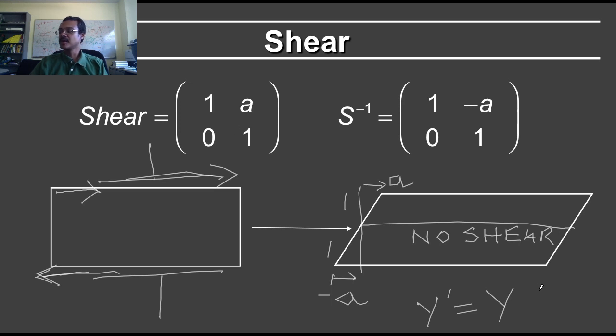However, in the first row of the matrix, you have that the new value of x, which is x prime, is equal to the old value of x. But now you have to add this quantity, which is the value of A times the y coordinate. So how much the shear is will depend on the y coordinate. And that's why this is 1 and A.